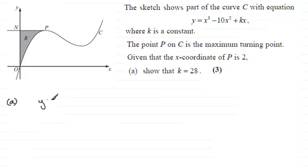So start off by writing y equals x cubed minus 10x squared plus k times x, and if we differentiate this in the usual way with respect to x, then dy/dx is going to equal 3x squared minus 20x plus k.